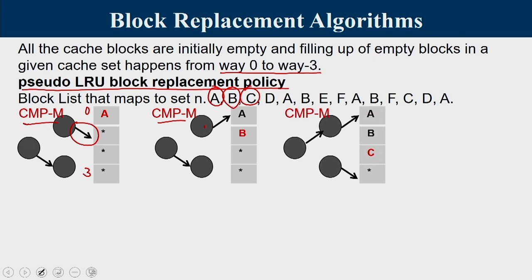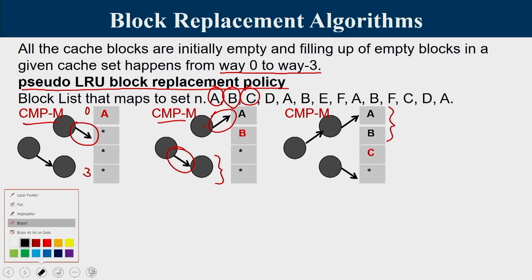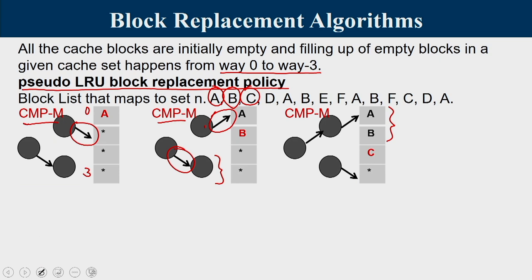Placing C in way 2: the root arrow flips upward (upper half now least recently used), and a new arrow is added for the lower child pointing toward way 3. Accessing D (compulsory miss) fills way 3; the lower child arrow flips to point at way 2. At this point, traveling the arrows from root identifies A as the pseudo-LRU block — root points upper, upper child also points upper.